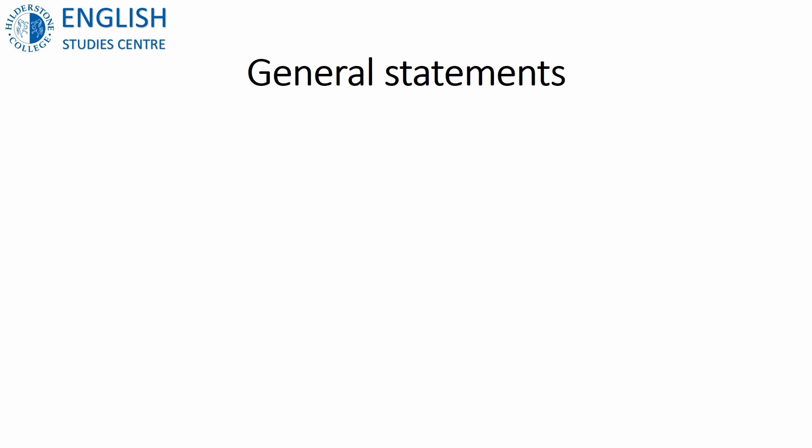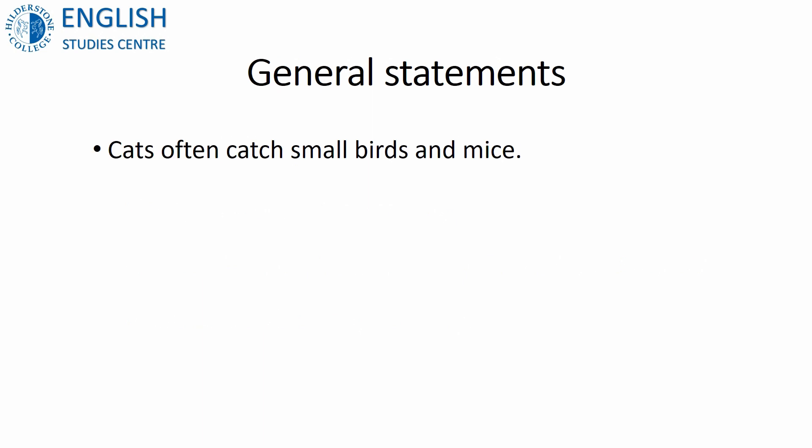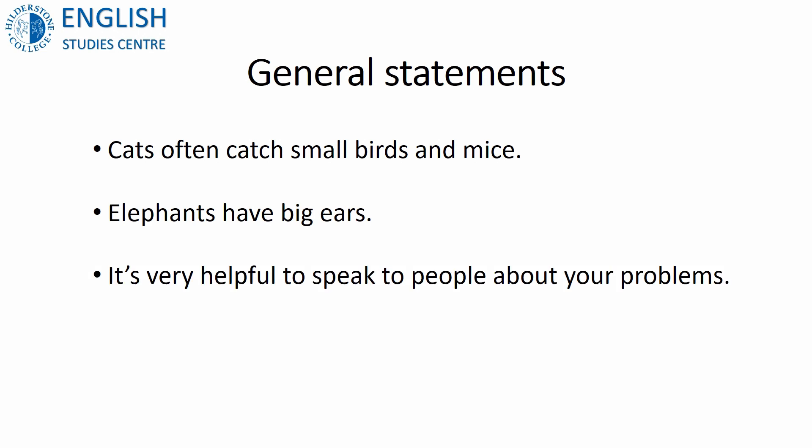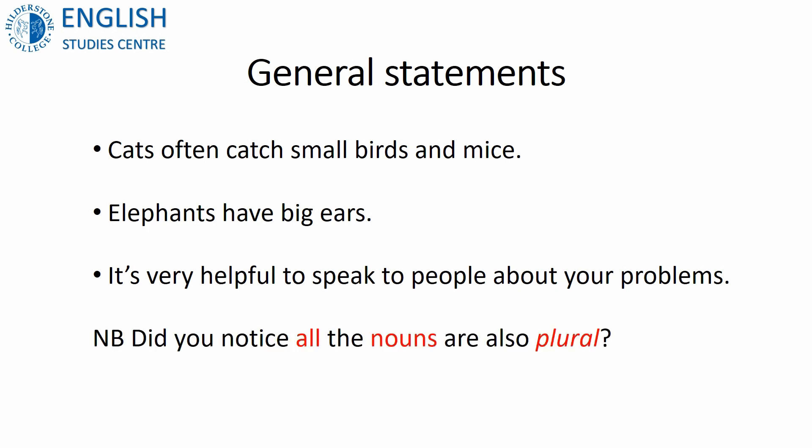When we're making general statements, we also don't use 'the'. So you can say: 'Cats often catch small birds and mice.' 'Elephants have big ears — I imagine they hear very well.' 'It's very helpful to speak to people about your problems.' Did you notice that all the nouns here are also plural? That's actually quite important — we use plurals when we're making general statements.